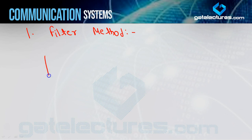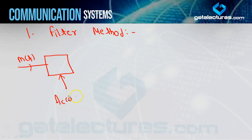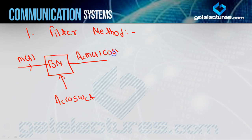Here we have a carrier signal AC cos(ωct). If I multiply both signals, or if I use a balanced modulator — which we have already studied in last videos — the balanced modulator is used for multiplying two signals in the time domain. When two signals are given to a balanced modulator in the time domain, they get multiplied. So the output of the balanced modulator will be AC·m(t)·cos(ωct), and this is your DSBSC signal — m(t) multiplied by the carrier gives you the DSBSC signal.